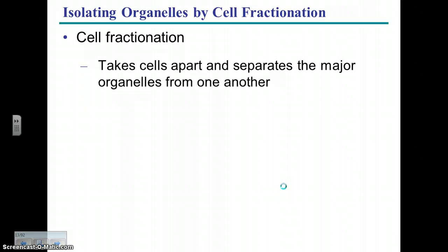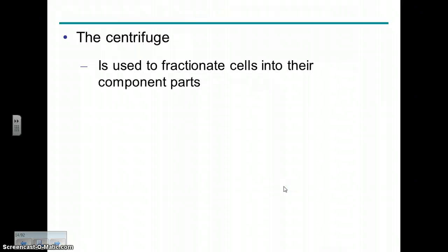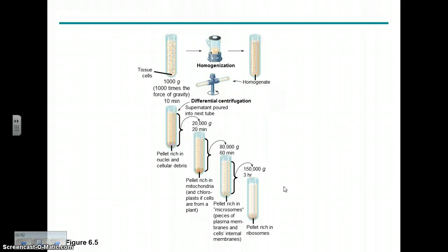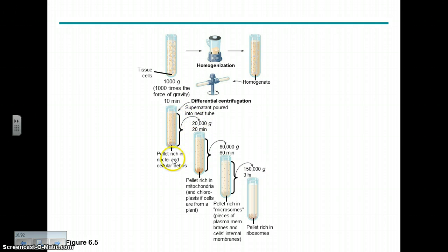Cell fractionation is a technique to break cells apart to get at their individual parts. You do this using a blender to grind up the cells, then spin them at various speeds. At low speeds you get out larger materials, and at higher speeds you get out smaller and smaller things. At the highest speeds, you can isolate ribosomes, which are some of the smallest cell structures.